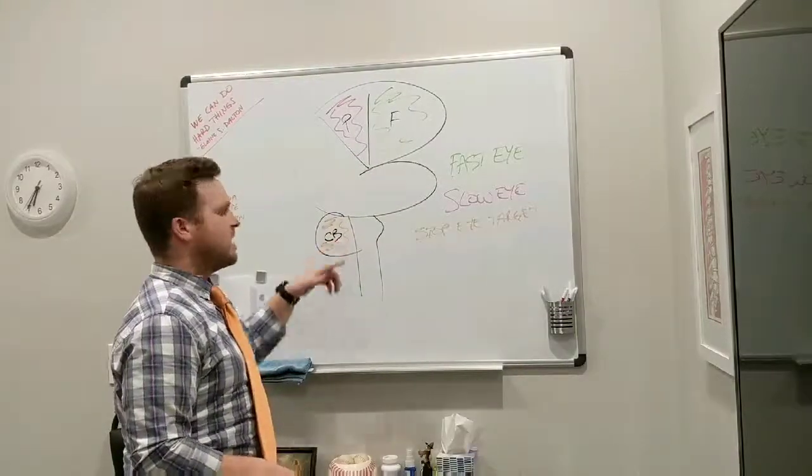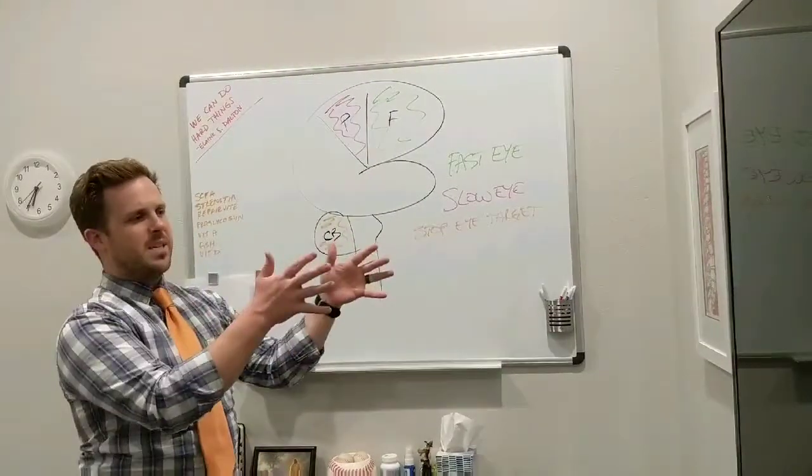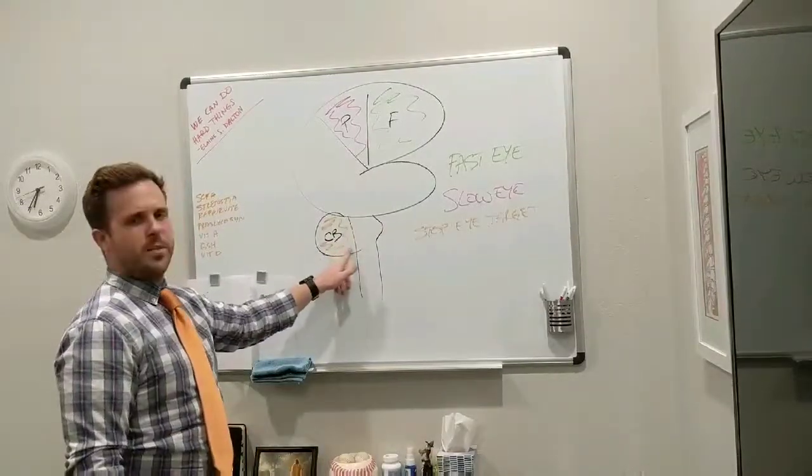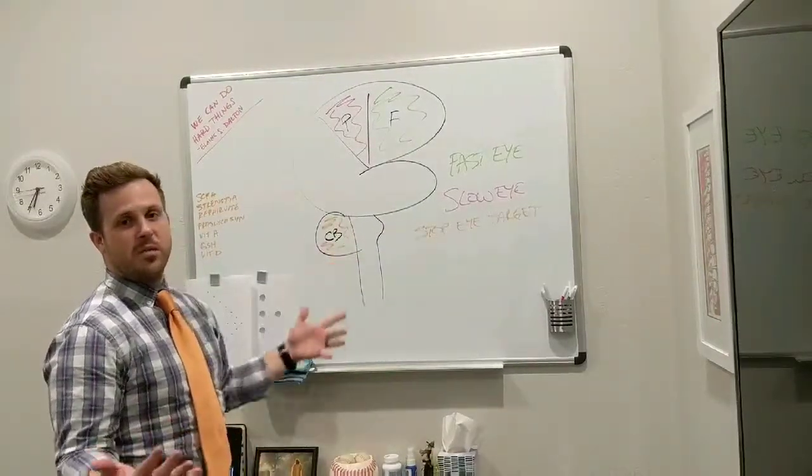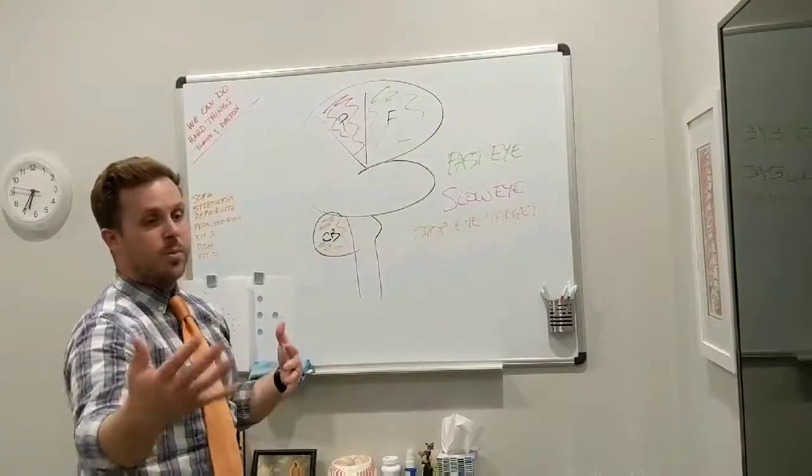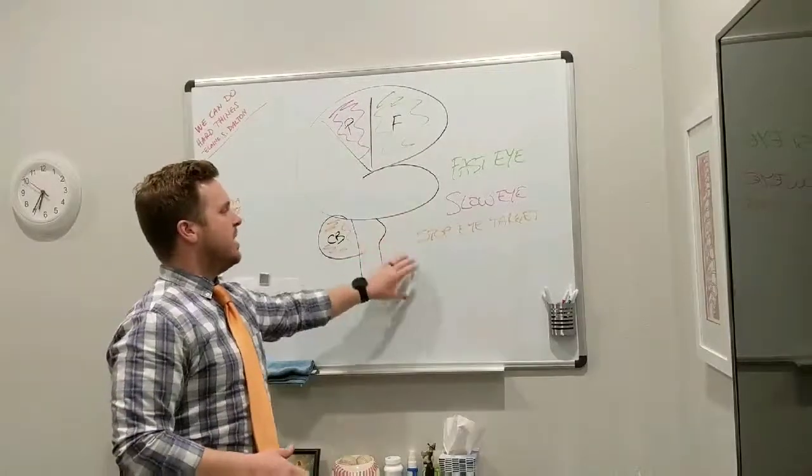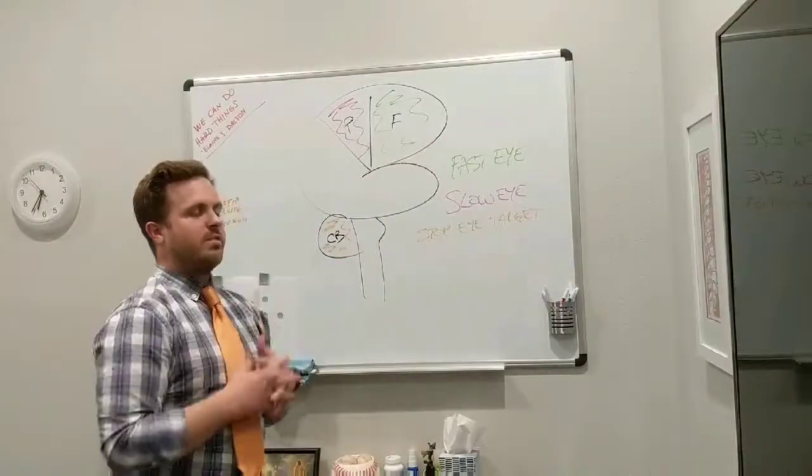And then again, checking those fast eye movements. If those eyes double jump to get to a target or go past a target and come back, we know cerebellum's a little bit off. And cerebellum coordinates all of our movement. It helps us understand how we're moving and how other people are moving in relationship. So this is kind of just the basic way that we evaluate a little bit of the brain.